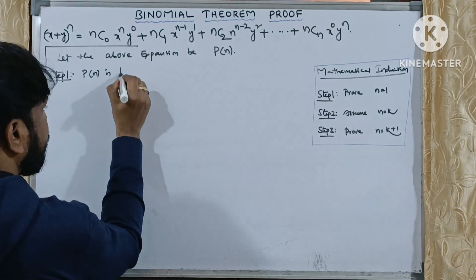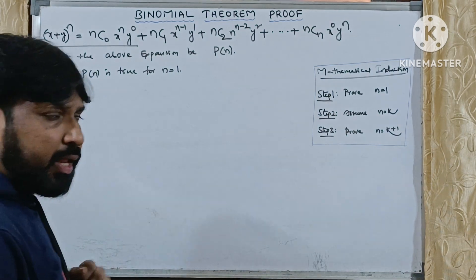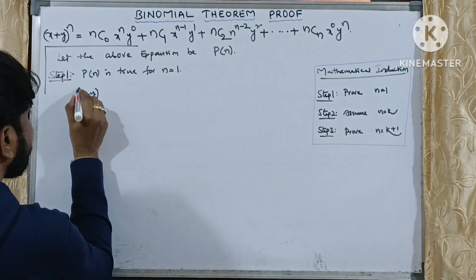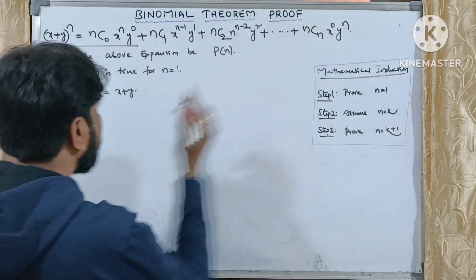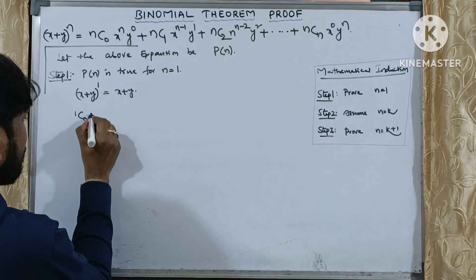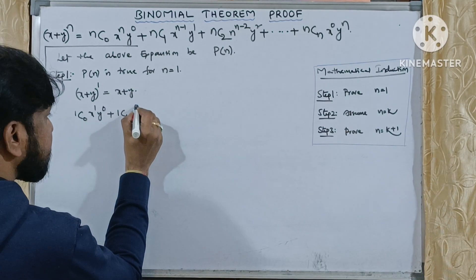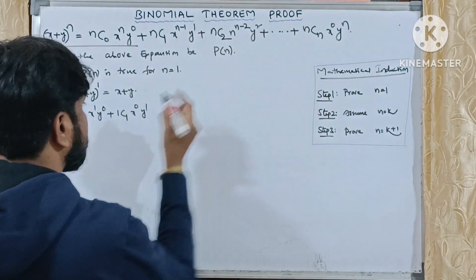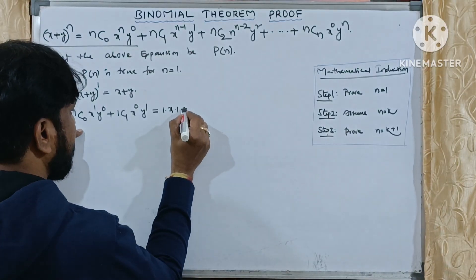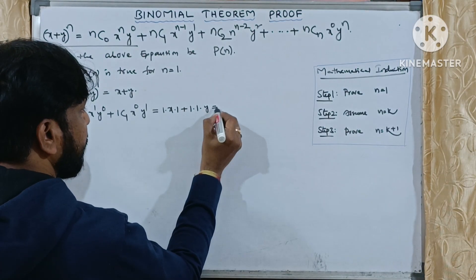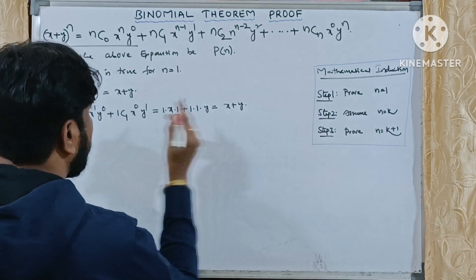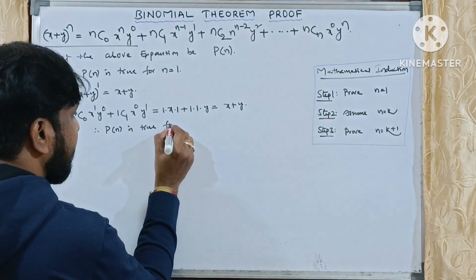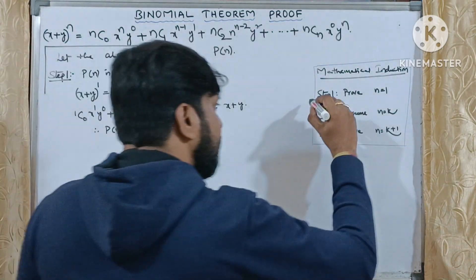P(n) is true for n = 1 means we substitute n = 1. LHS: (x + y)^1 = x + y. RHS: 1C0 · x^1 · y^0 + 1C1 · x^0 · y^1 = 1·x·1 + 1·1·y = x + y. LHS equals RHS, hence P(n) is true for n = 1. Step one is completed.